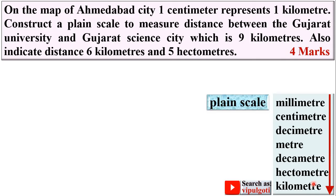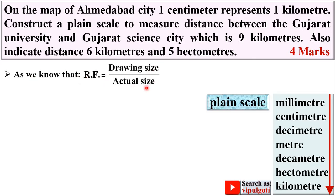First of all, remember the relationship of units in ascending order by multiplying by 10. The RF (representative fraction) is not given in this problem, so we have to find it. RF equals drawing size upon actual size. Here, one centimeter represents one kilometer, so drawing size is one centimeter and actual size is one kilometer.